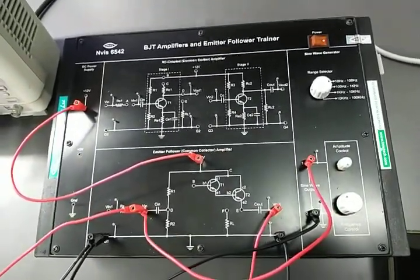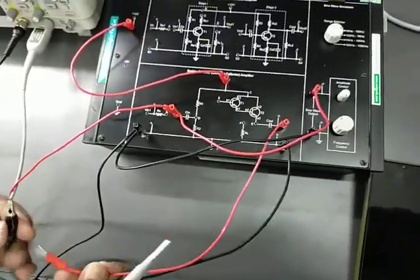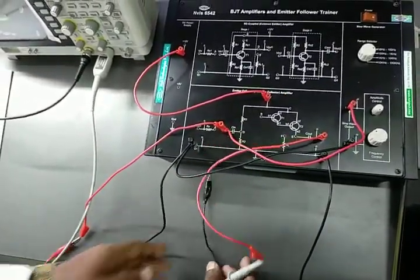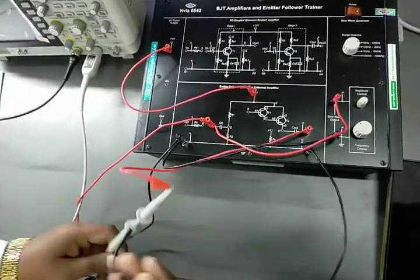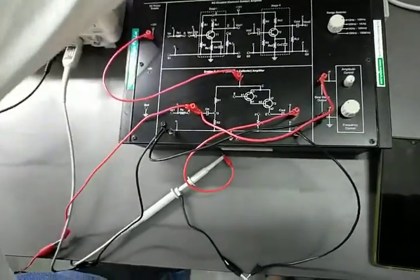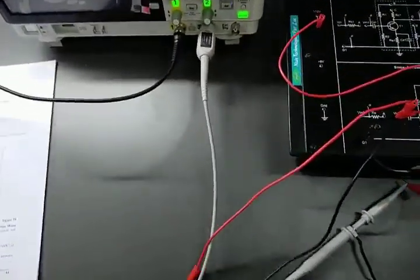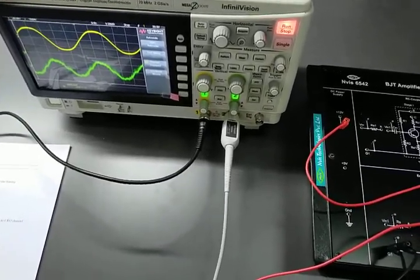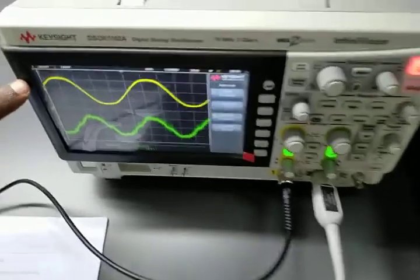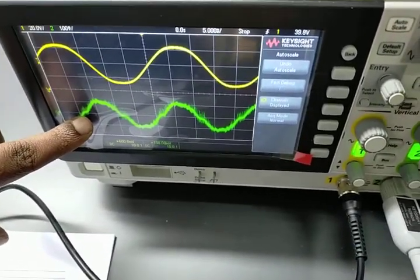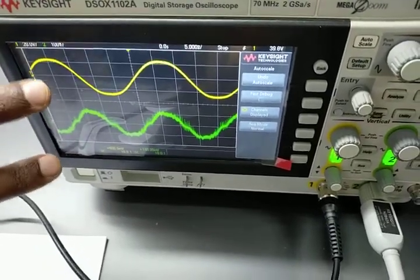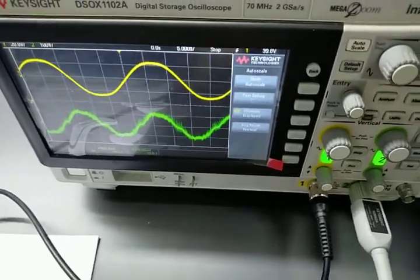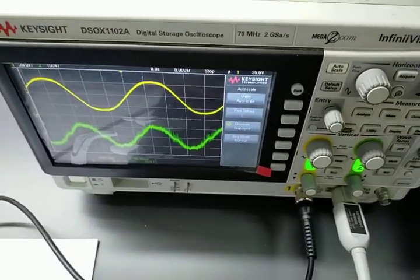This is for the input, and this is for the output. As you can see on the DSO, our input signal is in the same phase as the output signal. You can also see their amplitudes and frequency are approximately the same.